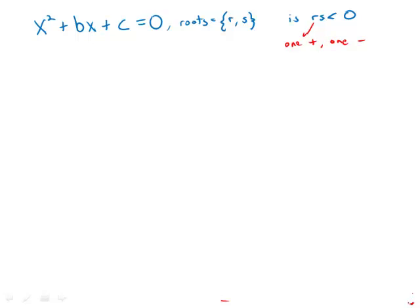If they're both positive, they'd multiply to something greater than 0, and if they're both negative, they'd multiply to greater than 0. So we want to know, do we have a situation where we have one positive root and one negative root?